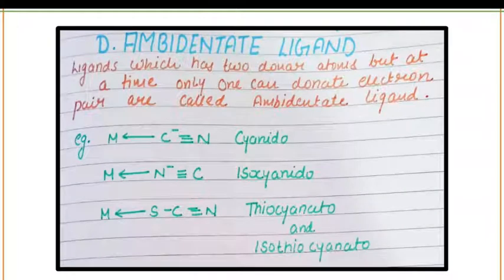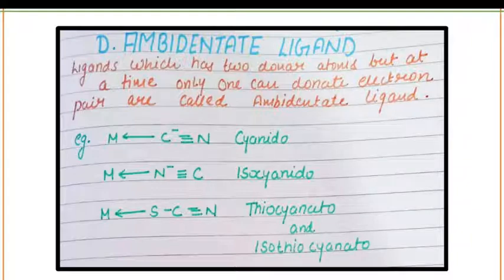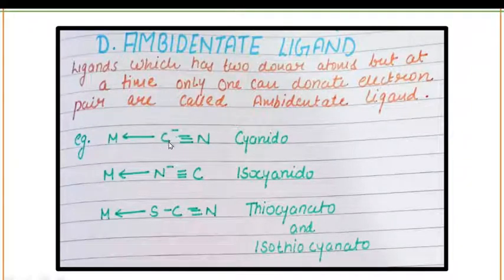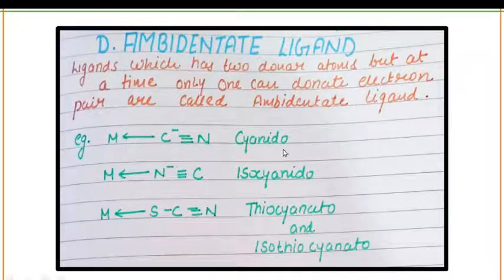Number four type is ambidentate ligands. These are ligands which have two donor atoms but at a time only one can donate an electron pair. For example, MCN — that is cyanido. The CN group can act as an ambidentate ligand. Carbon can donate an electron pair as well as nitrogen can donate an electron pair. When carbon donates the electron pair to the central metal atom, this is known as cyanido.